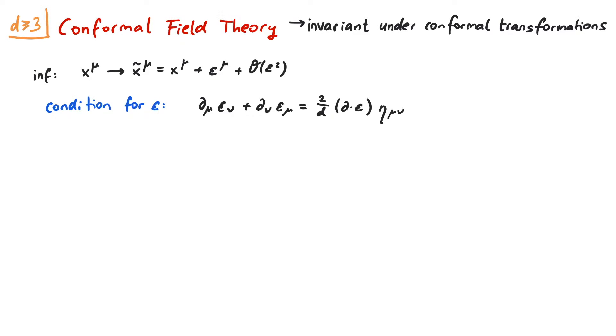Before we continue, it's useful to derive one more equation for epsilon. First, we take the divergence with respect to d_nu. This yields d_mu acting on the divergence of epsilon plus d_mu d_mu epsilon, which we can write as the box operator.